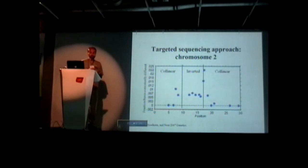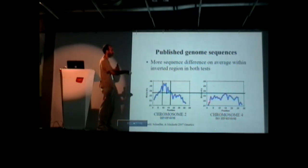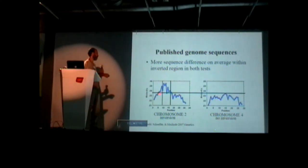We'll come back to these in just a minute. So it looks like the inverted regions, on average, have more differences between the species. Using targeted sequencing, we see the same pattern in the published genome sequences - more sequence difference in the inverted region than outside. This illustrates that something about the inverted region allows for more difference between the two species.